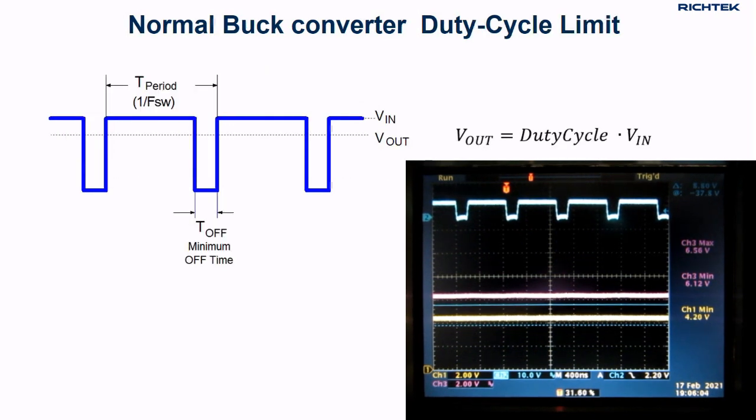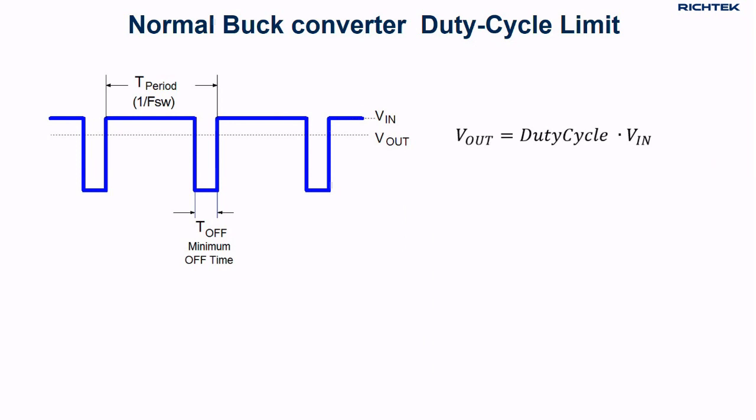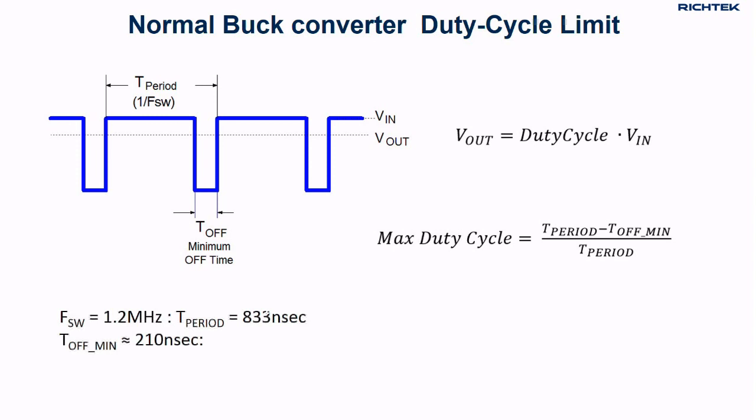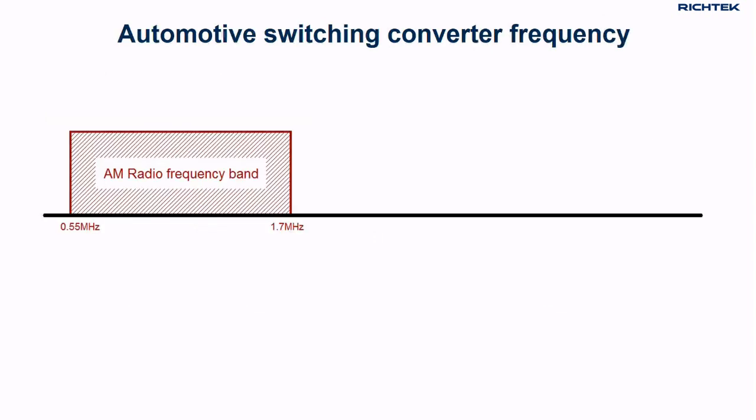The maximum duty cycle limit of the buck converter is related to the minimum off time and the switching frequency. The RT8293B in this example has a minimum off time of around 210 ns and a relatively high switching frequency of 1.2 MHz. This results in a 75% maximum duty cycle. To avoid EMI interference with the car radio AM band, automotive customers often prefer to use switching converters with frequencies above 2 MHz.